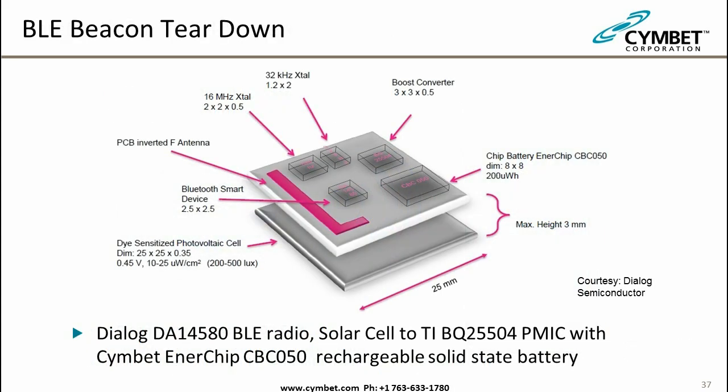Tearing down the beacon: on the left is the Bluetooth Smart device with a small inverted antenna and crystals. The solar cell is on the bottom, tied into a Texas Instruments BQ25504 power management IC. The system battery is a SIMBIT Enerchip. The device is 25 millimeters on a side — about an inch square. We're working with Dialog to shrink this further and reduce power consumption in future iterations.